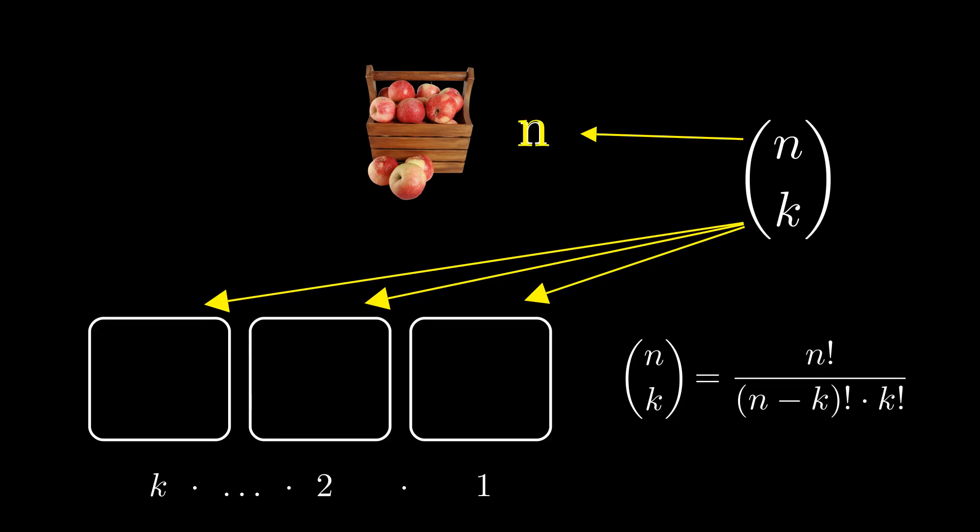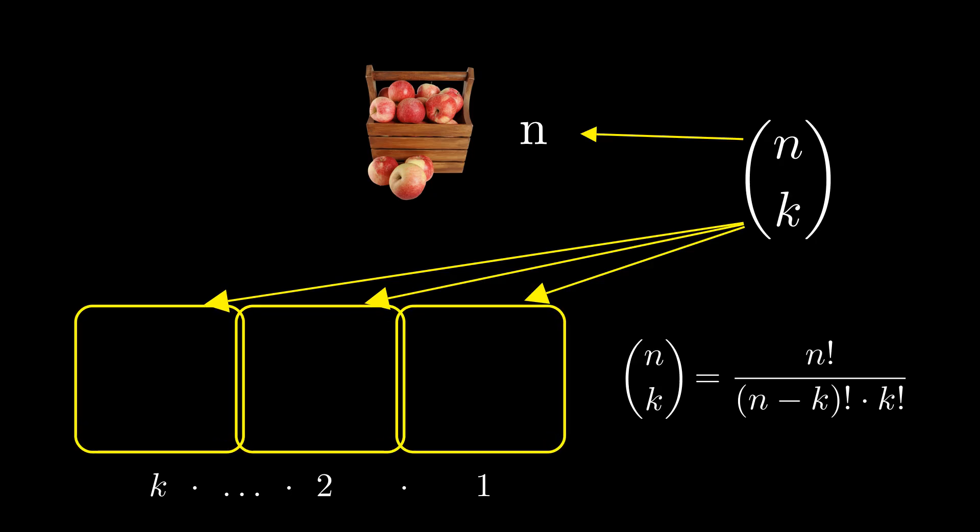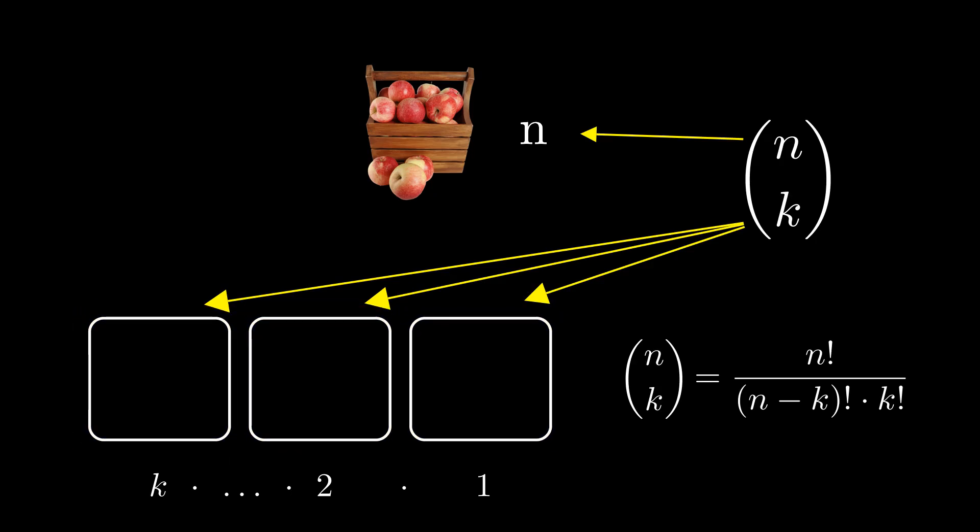We always know how many elements we have, or in other words, the value of n, and how many k elements we want to choose. Just substitute these into the formula for such problems and you'll have all the possibilities. Let's see what your chances are of winning the biggest European lottery jackpots.